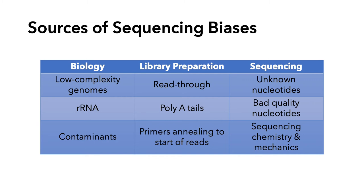Sequencing-related sources of bias include unknown nucleotides, where the sequencer can't call a base, bad quality nucleotides where there's low confidence in base calls, and sequencing chemistry and mechanics. For example, it's totally normal for read one to have higher average quality scores than read two, because sometimes the second read pairs will sit too long before the second pass-through on the sequencer. These sequencing biases are almost entirely out of your control — there are ways to address them, but not much you can do to prevent them.